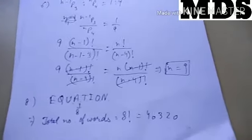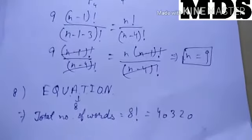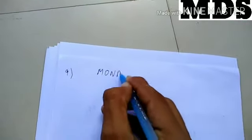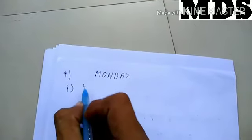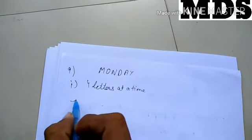So 40,320 words can be formed with or without meaning. Next, question number 9 is given using the word MONDAY. We have to make words with or without meaning, taking four letters at a time.